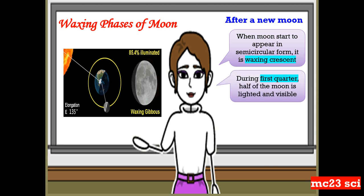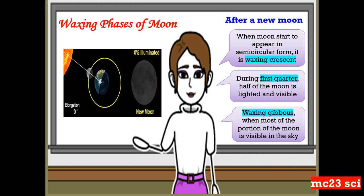And during the first quarter, half of the moon is lighted and visible. And also for the waxing gibbous, when most of the portion of the moon is visible in the sky.